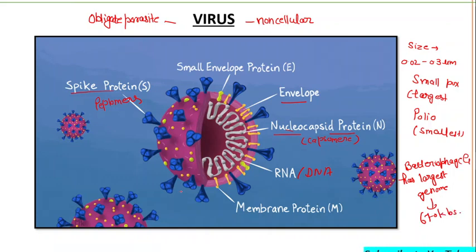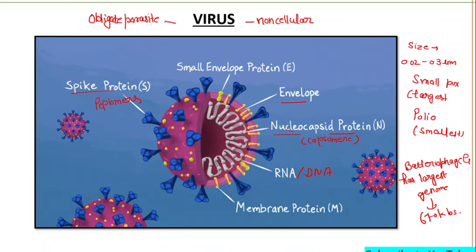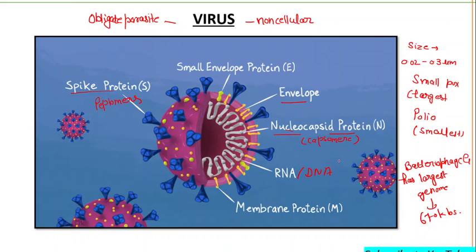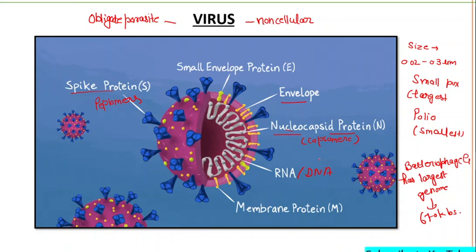The genome of a virus consists of either DNA or RNA, which may be single-stranded or double-stranded. The genomic RNA strand of a single-stranded RNA virus is called sense, positive, or plus-sense if it can serve directly as mRNA. It is called antisense, negative-sense, or minus-sense if a complementary strand synthesized by viral RNA transcriptase serves as the mRNA.